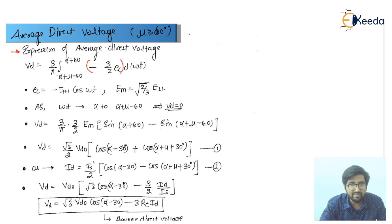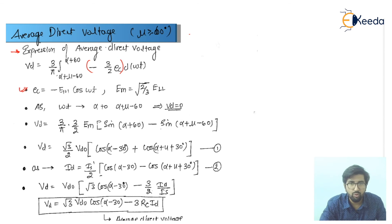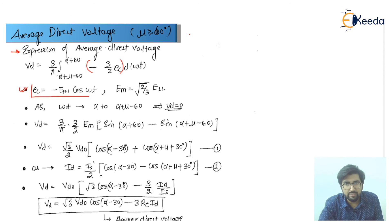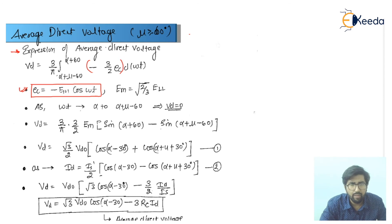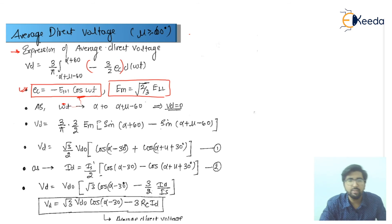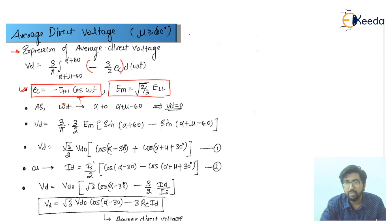The integration is from alpha plus mu minus 60 to alpha plus 60. After putting these values — what are the values of EC and EM — if we talk about EC, then EC is equal to minus EM·cos(omega·t), and the value of EM is actually root(2/3) EL, that is 2 by 3 inside the root, where EL is the line voltage. So we have to put these values and simply integrate.